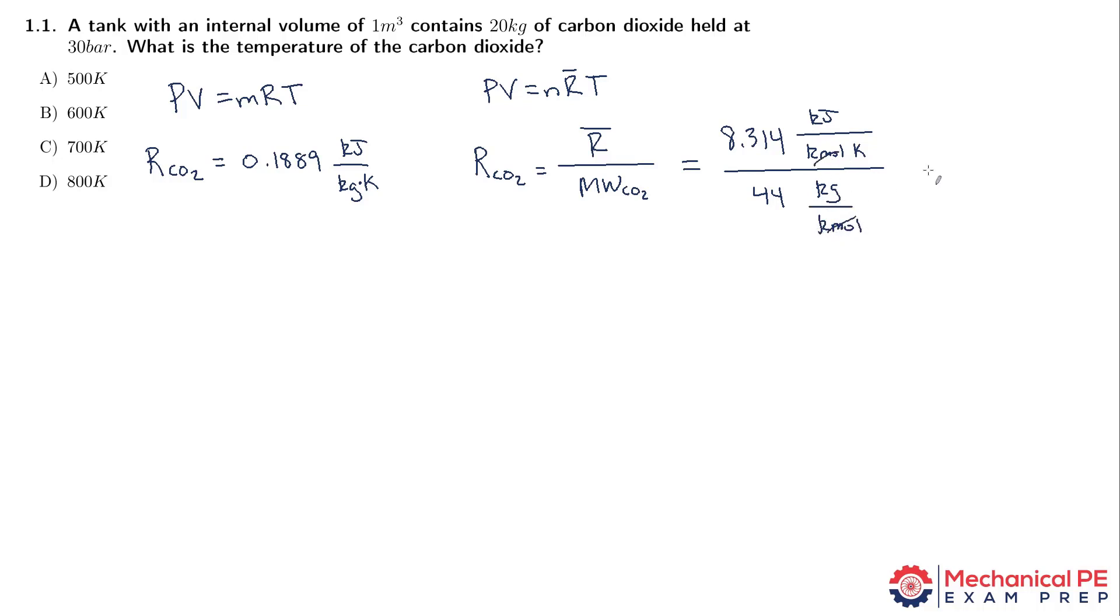And we end up with the same number, which of course we should. 0.1889 kilojoules per kilogram Kelvin, same as we found in the lookup table. So you're going to use the lookup table whenever possible because it's faster, but I want you to know how to do this as well.